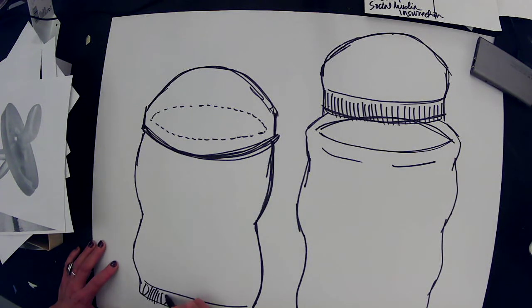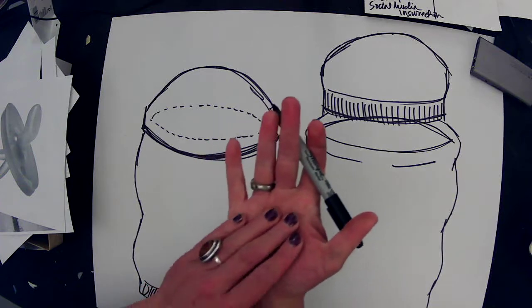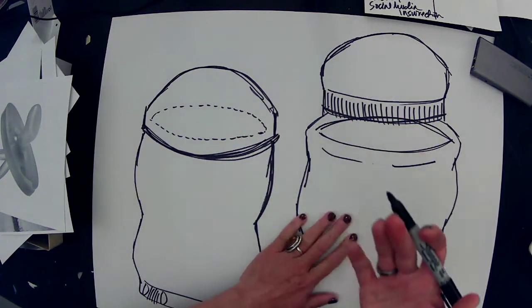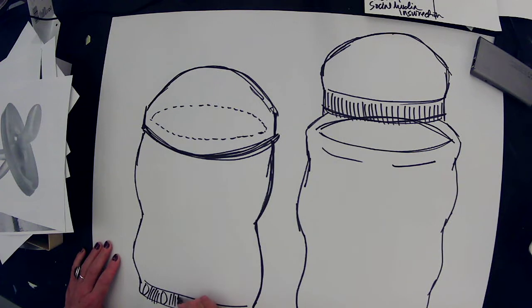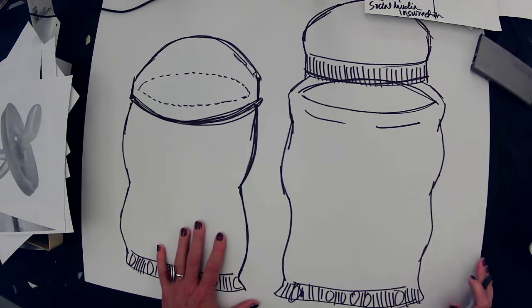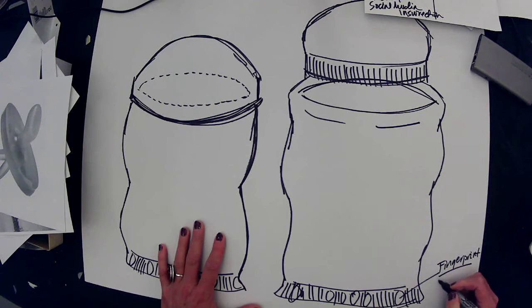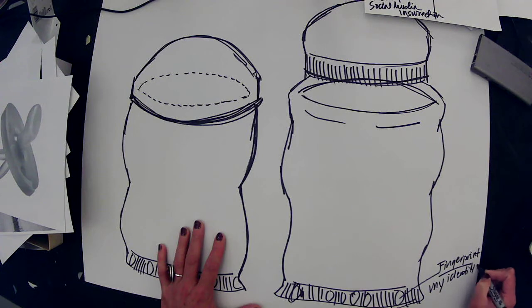Maybe even my fingerprint, wouldn't that be cool? I mean that's like a record of your fingerprint, is like an identity record. Maybe putting your handprint or your palm print or carving your lifelines into your vessel. All these things to make your vessel more about you can be considered. I'm going to take some notes on here right: fingerprint, my identity, stamp.